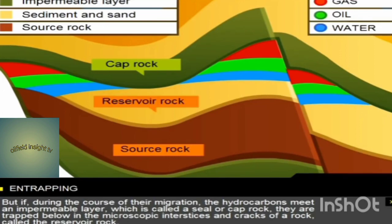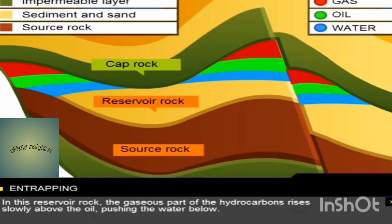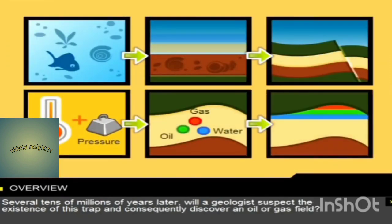But if during the course of their migration the hydrocarbons meet an impermeable layer, which is called a seal or cap rock, they are trapped below in the microscopic interstices and cracks of the rock called the reservoir rock.